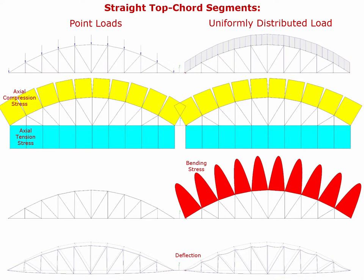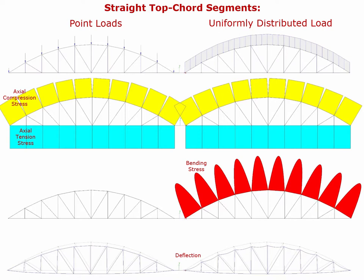The diagram at the bottom shows the deflection — in this case for point forces on the straight-segment top chord, and in this case for continuous loading. You'll notice the bending deformation, which is what's leading to these bending stresses. So for this situation, straight segments seem to be more appropriate for point loading, and we would prefer not to have continuous loading between the joints when straight segments are involved.